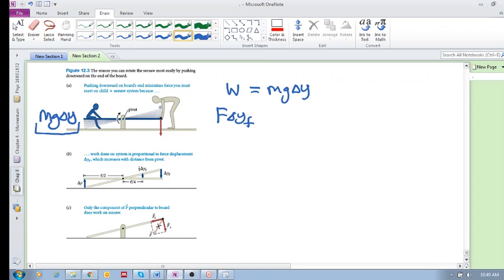The work done by this person is the force times the displacement, delta y_f, which is equal to m g delta y. Now, because he is pushing right at the end, these deltas are the same—these displacements are the same—which means that this F is equal to mg in this specific case.